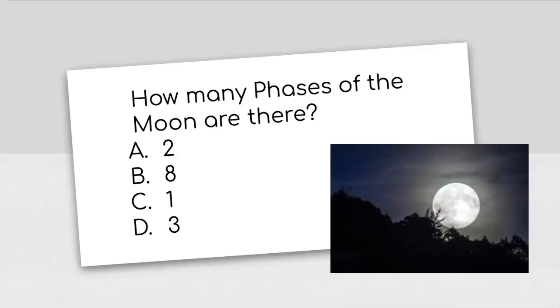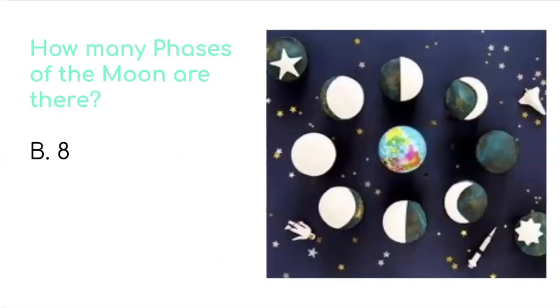First grade question. How many phases of the moon are there? And I gave you some choices. A, two phases? B, are there eight phases? C, there's one phase? Or D, there are three phases? Choose one of those. The answer? How many phases of the moon are there? B, there are eight phases of the moon. Moving on.